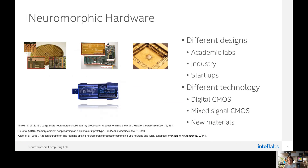As you might have seen in the workshop, there are different types of neuromorphic hardware out there — different designs developed by academic labs, industrial labs, and startups, using different technologies to realize what people call neuromorphic devices. We at Intel use digital CMOS to develop our neuromorphic research chip. Some labs use mixed-signal CMOS with analog and digital electronics, and some people explore new materials such as memristive or spintronic devices. So neuromorphic hardware looks very different, and very different technologies are used to implement it.